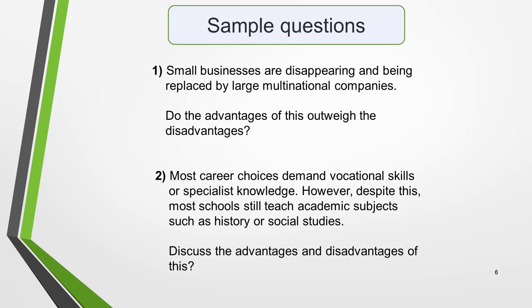Sample question one: 'Small businesses are disappearing and being replaced by large multinational companies. Do the advantages of this outweigh the disadvantages?' Sample question two: 'Most career choices demand vocational skills or specialist knowledge. However, despite this, most schools still teach academic subjects such as history or social studies. Discuss the advantages and disadvantages of this.'